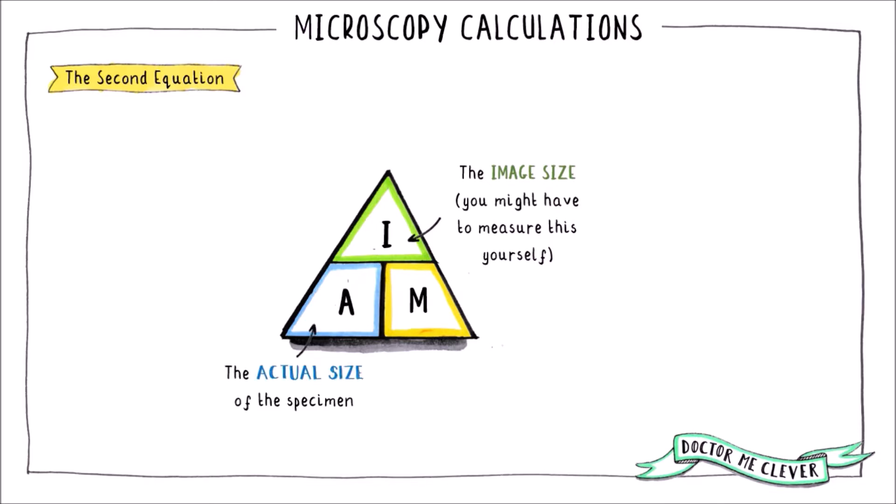A stands for the actual size of the specimen. It is sometimes referred to as the real size of the specimen. This is always a smaller value than the image size and the units for A will most likely be given in micrometers or millimeters.